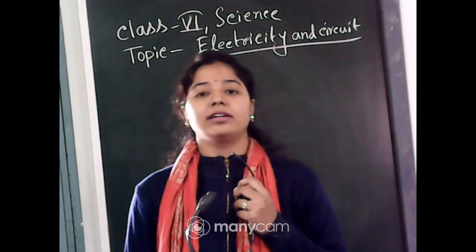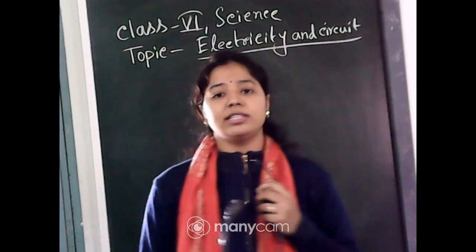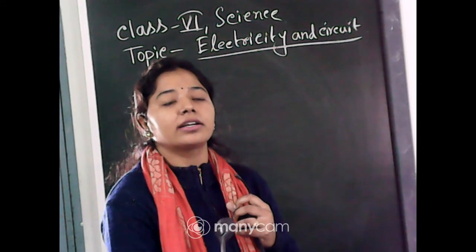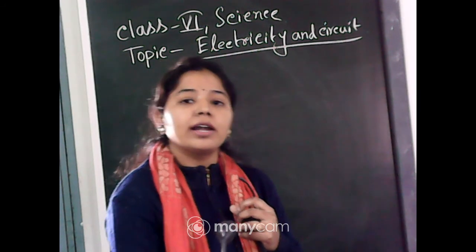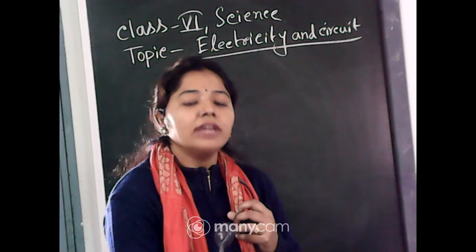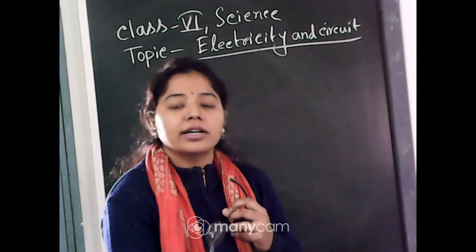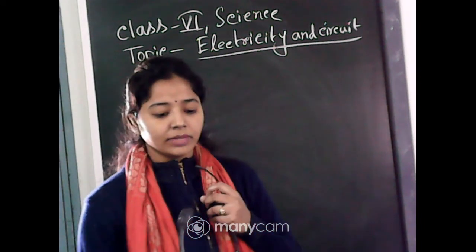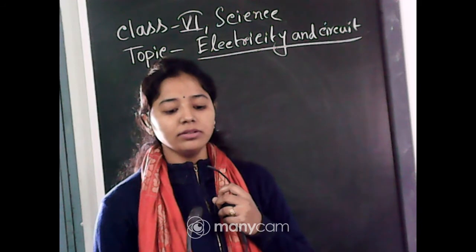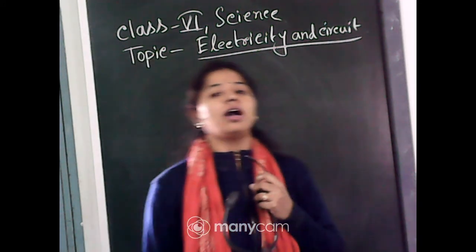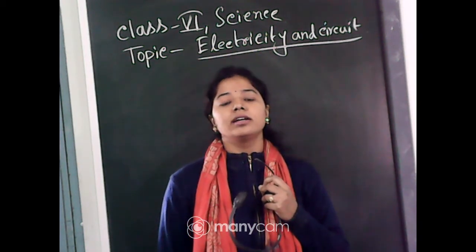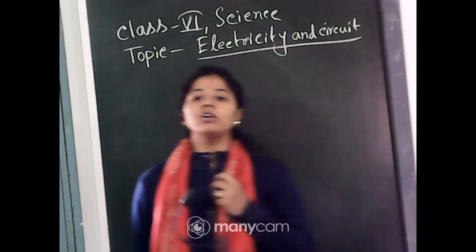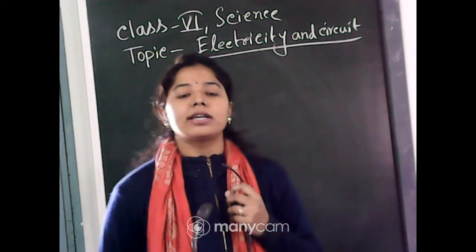On the basis of conductivity of electricity, we can categorize materials into two categories: conductor and insulator. All metals are good conductors of electricity — some are very good conductors, some are medium conductors; not all are equal. Non-metals are mainly insulators.